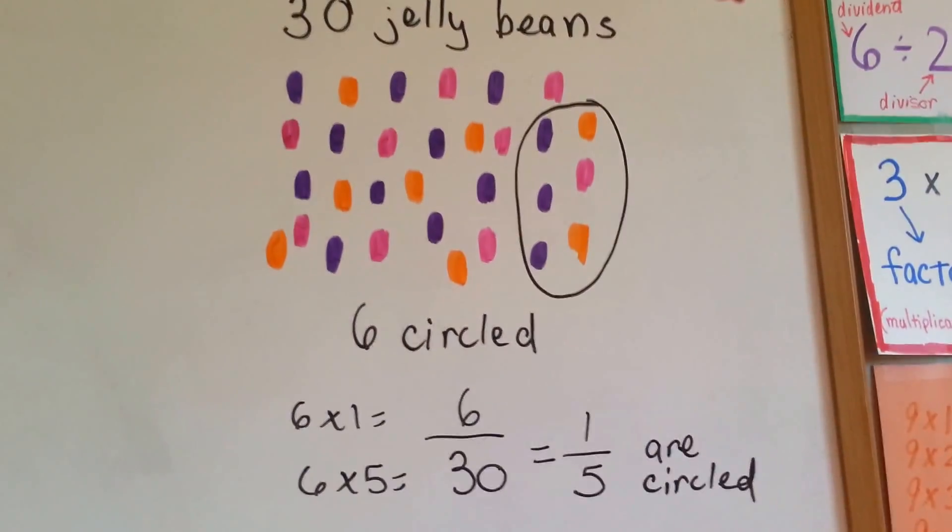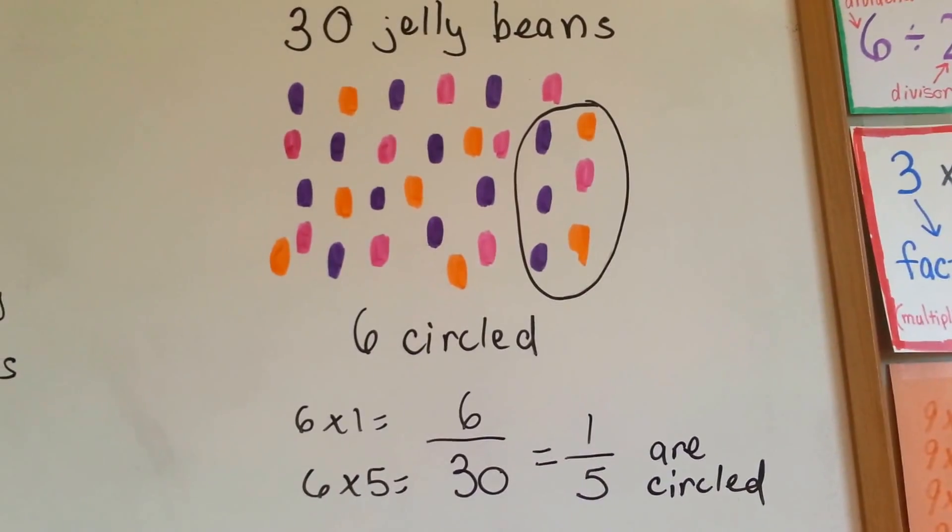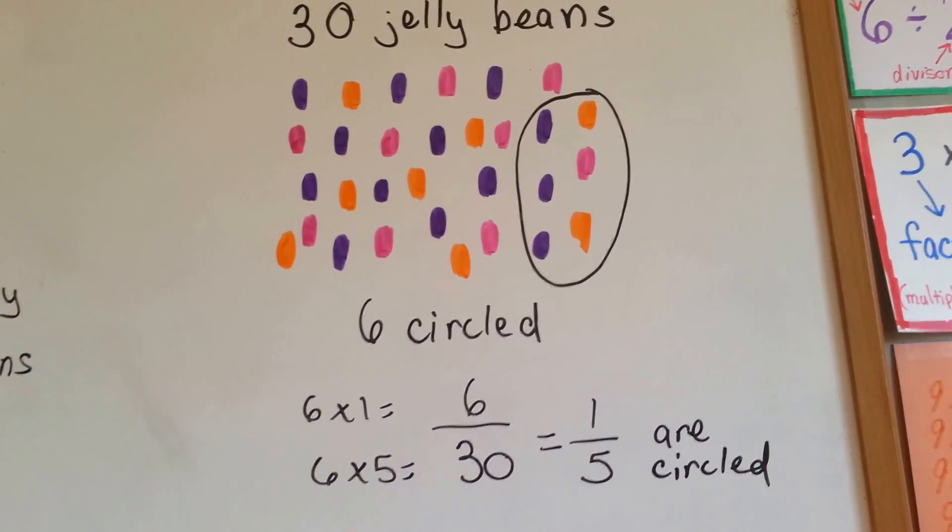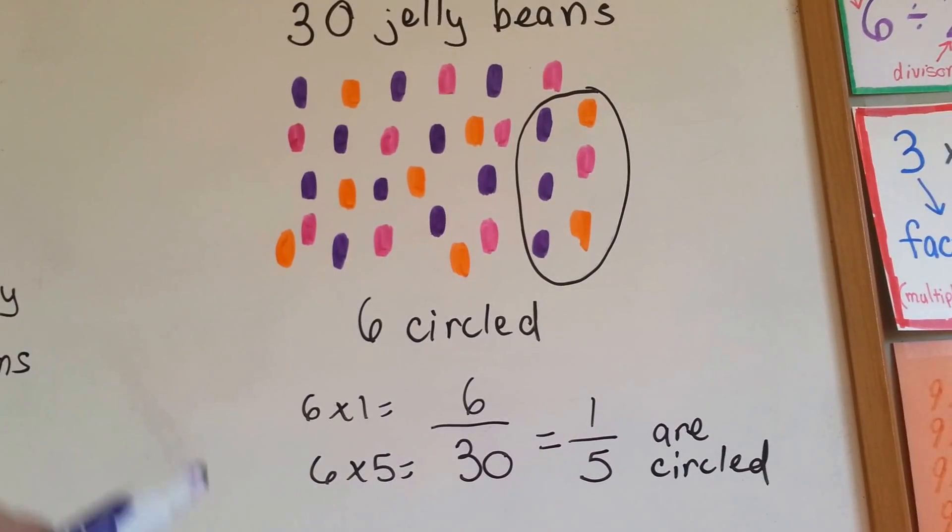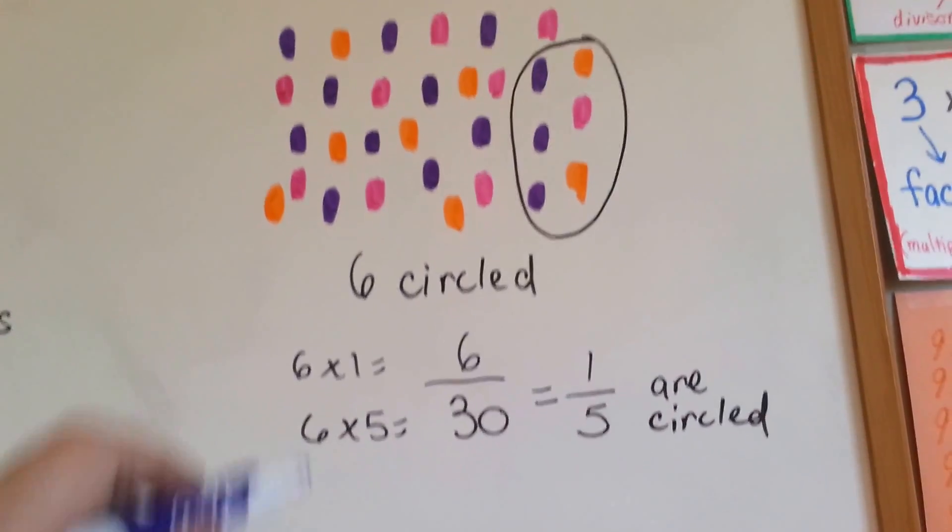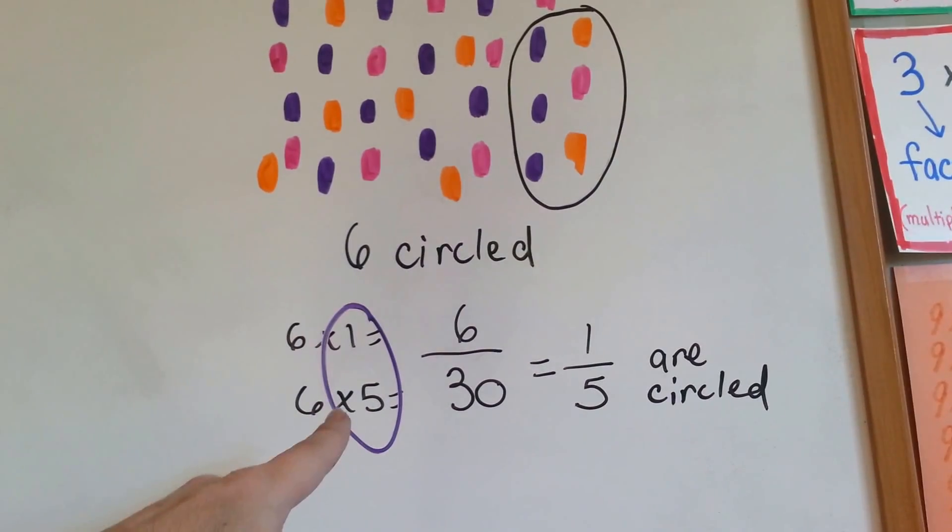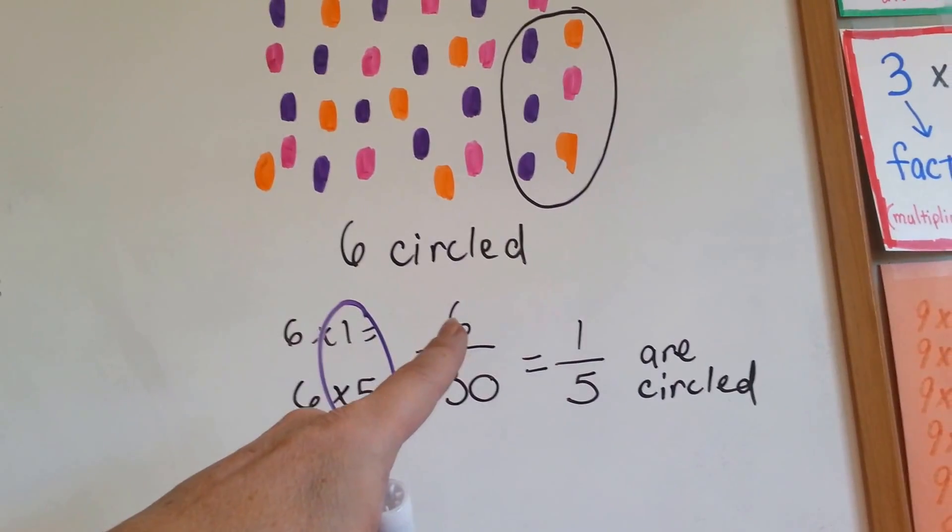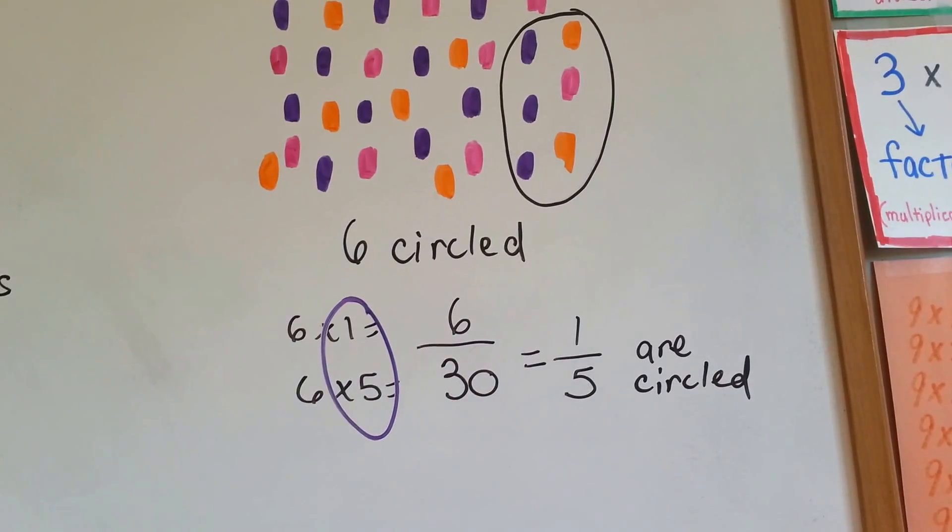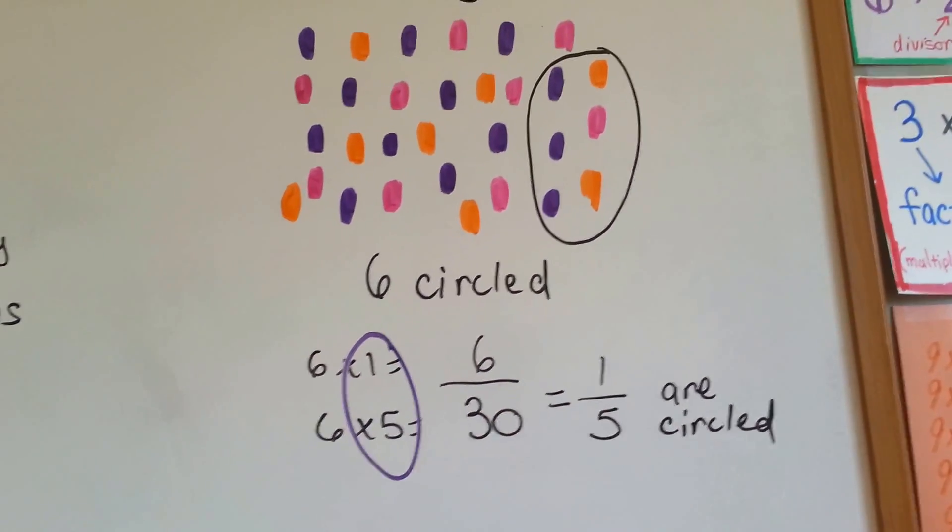Okay, let's try another one. You've got thirty jelly beans. Six of them are circled. Six of thirty of them are circled. Six times one is six. Six times five is thirty. Here's our one-fifth. Six goes into thirty five times. One-fifth are circled.